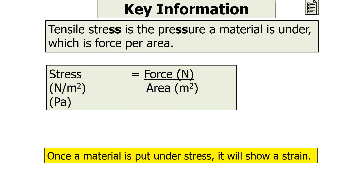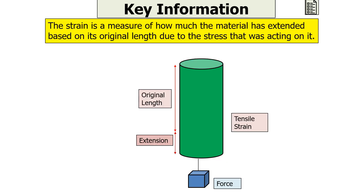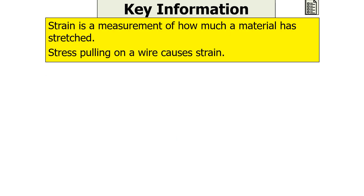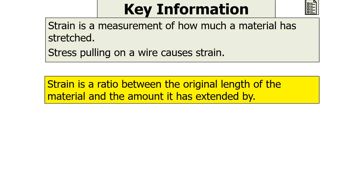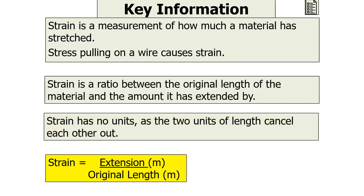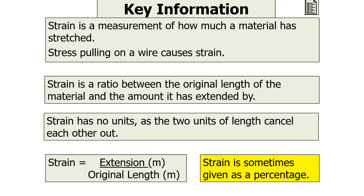Once a material is put under stress, it will show a strain. Strain is a measure of how much the material has extended based on its original length due to the stress acting on it. It doesn't matter if the forces are compressive or tensile — tensile forces are taken as positive and compressive forces as negative. Strain is a ratio between the extension and the original length of the material, so it has no units as the two length units cancel. Sometimes strain is given as a percentage.